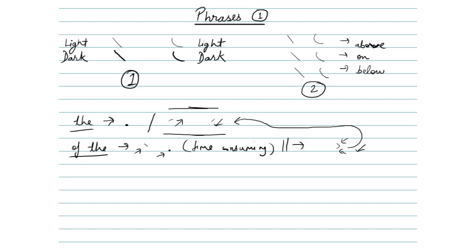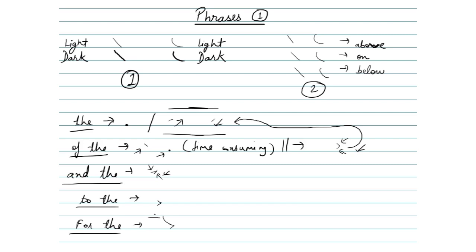Suppose we have the phrase 'and the' — it can be simply made like this to save time. We also have 'to the', which can be made like this. Next, 'for the' can be made like this: first we made this curve to represent 'for', which is a grammalogue, then we attached this dash in downwards motion to represent 'the'. So this is our phrase 'for the'.